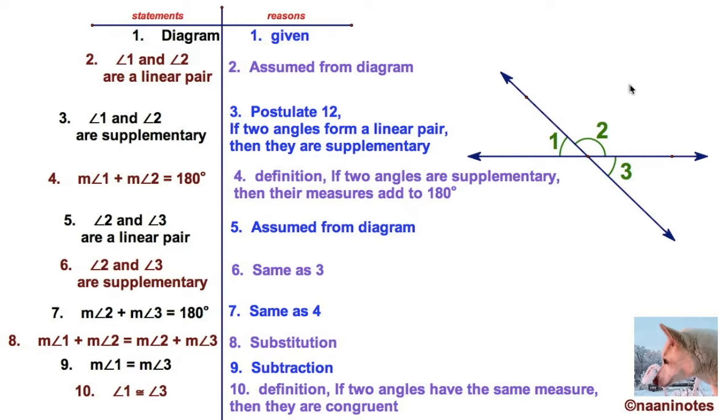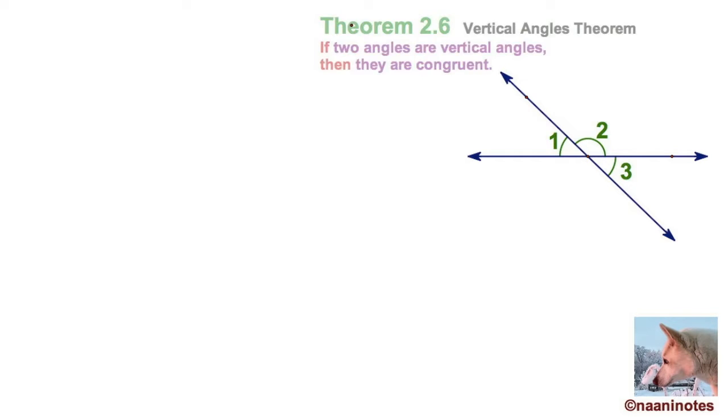Now, let's talk just briefly about what a theorem means. You all know this, your teacher told you this. The whole reason we do this proof, we prove a theorem, and then we replace all of that with this: If two angles are vertical angles, then they are congruent. And from this day forward, you're just going to use that.